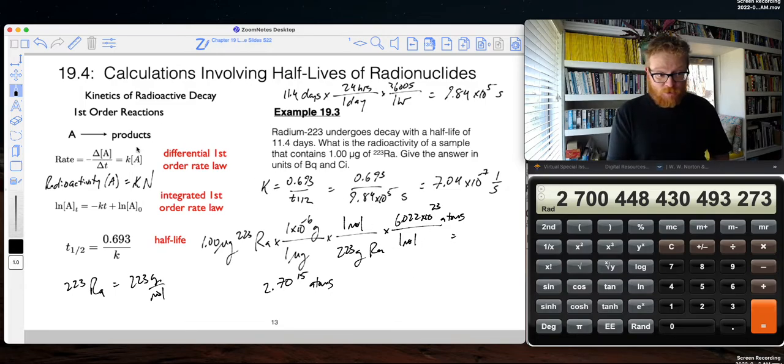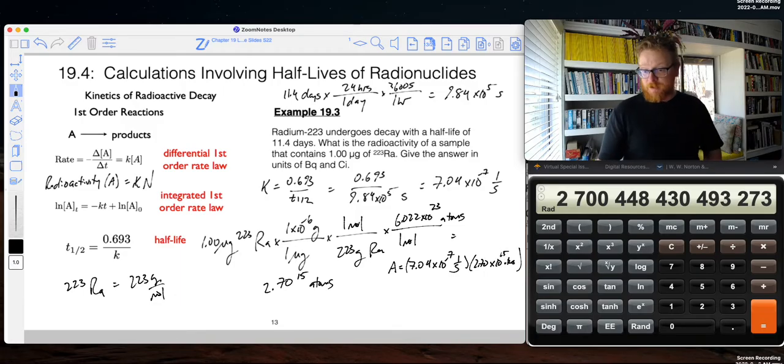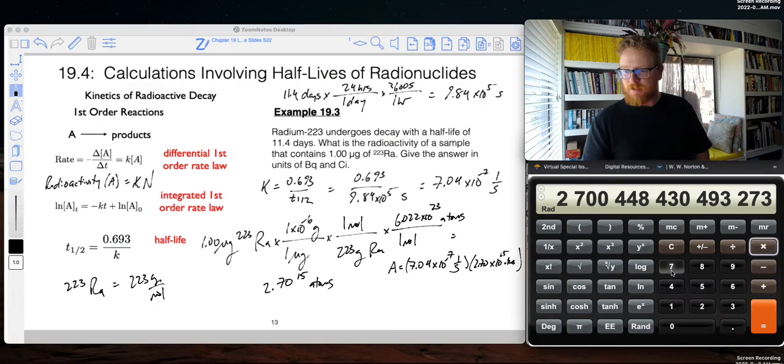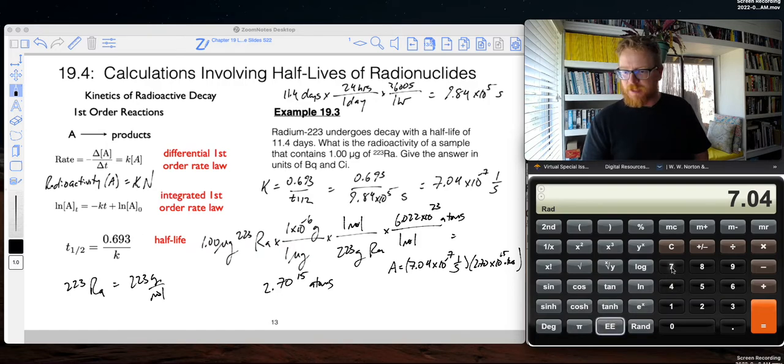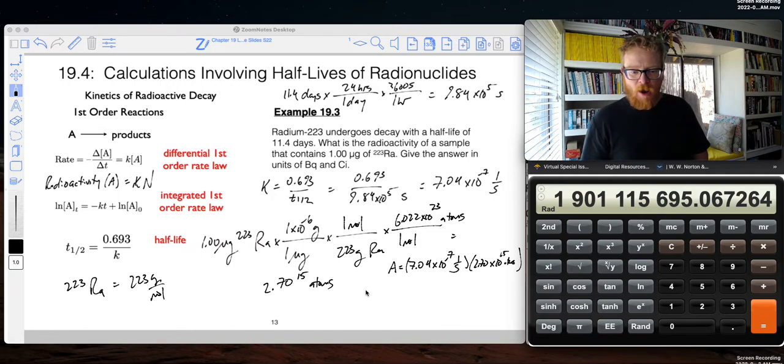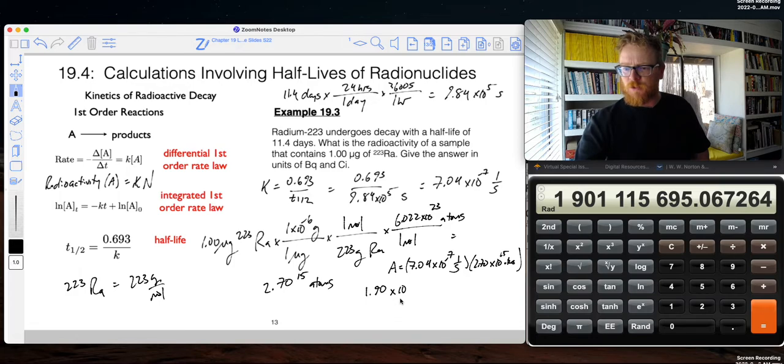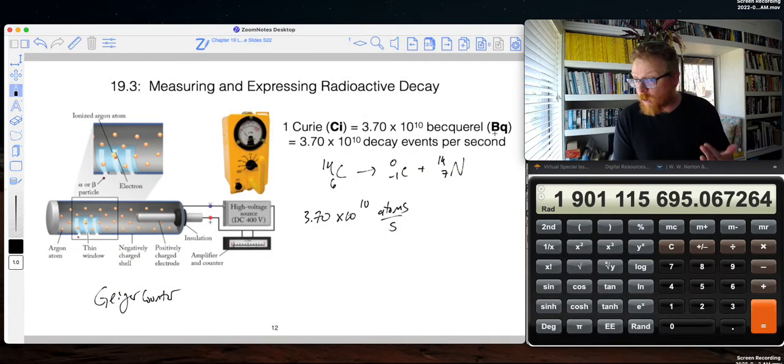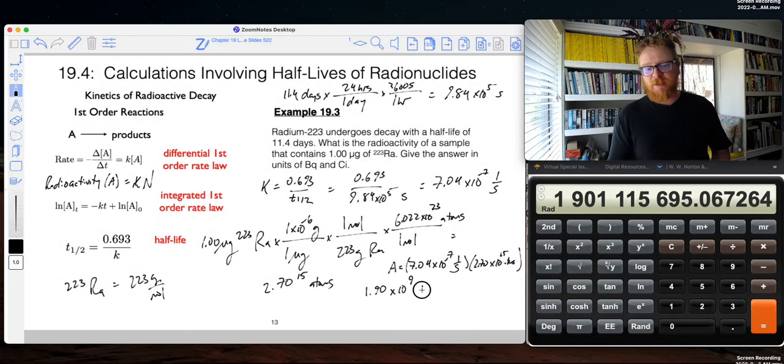Now, this radioactive decay goes very simple once I have those two units. I can say my radioactive decay is going to be K times N. So, 7.04 times 10 to the minus 7, 1 over seconds, times 2.70 times 10 to the 15 atoms. I'll leave that number here in the calculator. And when I say times 7.04 times 10 to the minus 7, that's going to give me a number. I don't know why it's not giving me scientific notation. 1.90 times 10 to the 9. That is directly in atoms per second, which is in units of Becquerel automatically. I can say 1.9 times 10 to the 9 Bq.